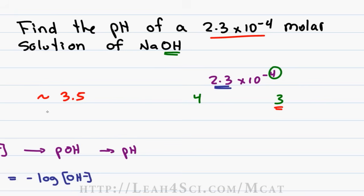3.5 on the MCAT will be close enough and then we do 14 minus 3.5 which is our pOH and that gives us an answer of 10.5 for our pH. Punching this example into the calculator gave me an answer of 10.36 which on the MCAT is close enough.